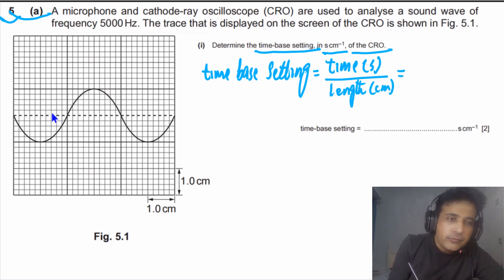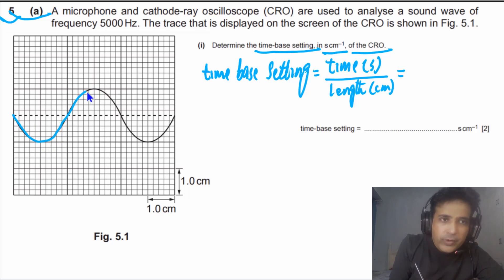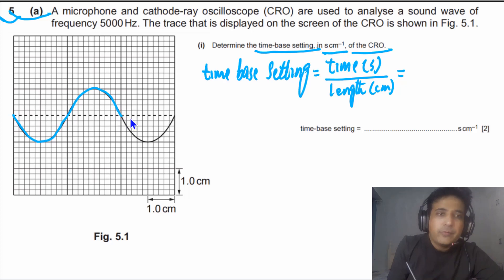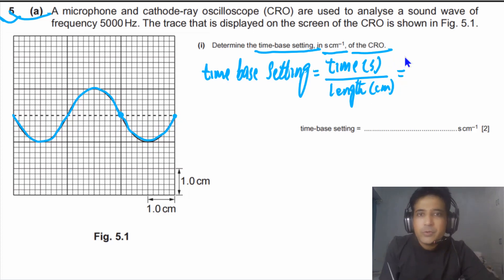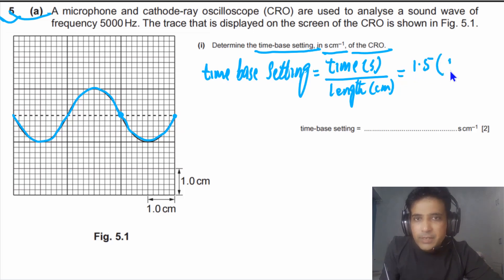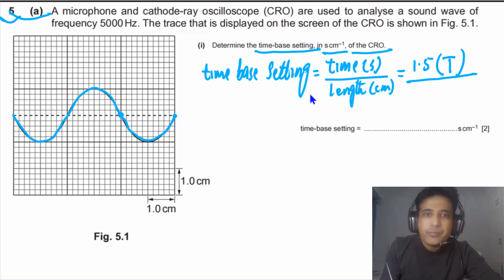If you look at this given wave, you can see we have one complete wave and also half a wave. So in this case we have 1.5 waves. Therefore, the total time will be equal to 1.5 times the time period of the wave, divided by the length.